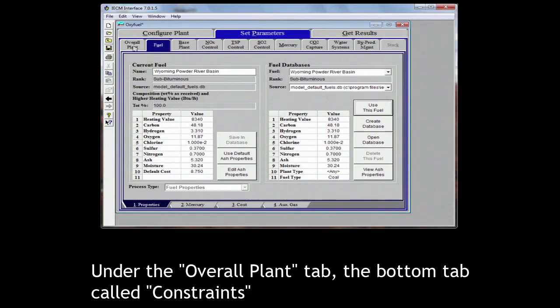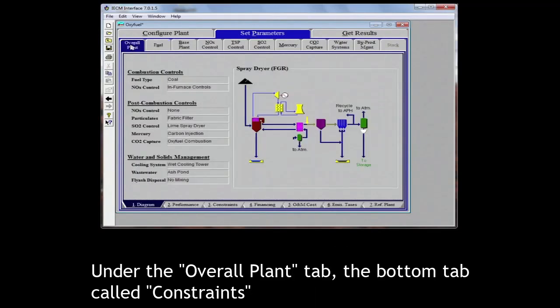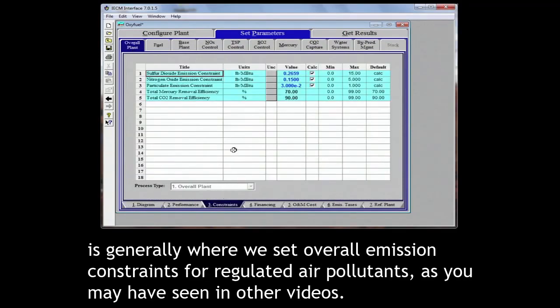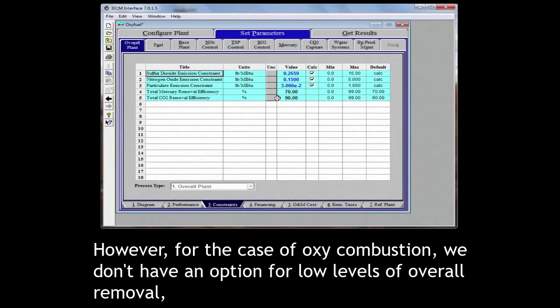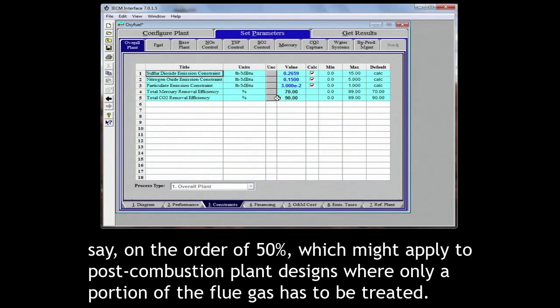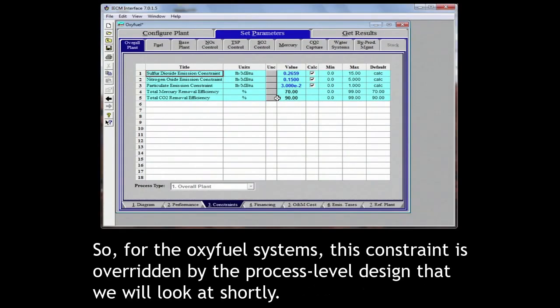Under the overall plant tab, the bottom tab called constraints is generally where we set overall emission constraints for regulated air pollutants, as you may have seen in other videos. However, for the case of oxy-combustion, we don't have an option for low levels of overall removal, say on the order of 50%, which might apply to post-combustion plant designs where only a portion of the flue gas has to be treated. So for the oxyfuel systems, this constraint is overridden by the process level design that we'll look at shortly.